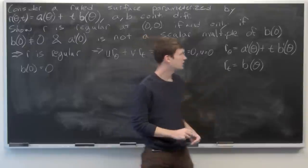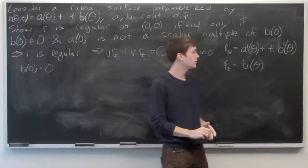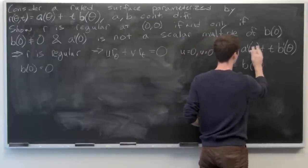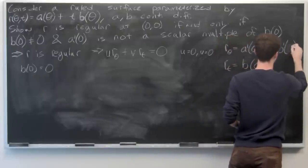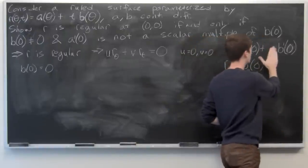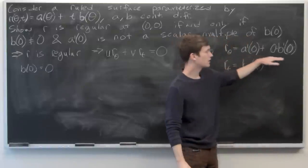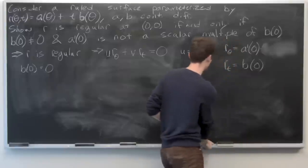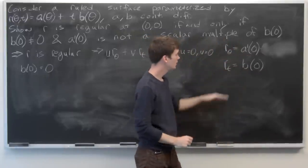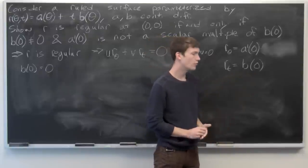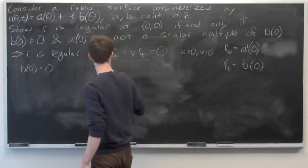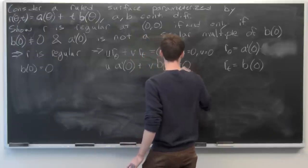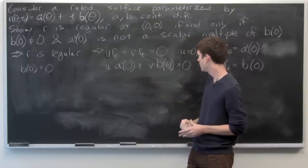We evaluate these at the point (0,0), since we're assuming r is regular at (0,0). Substituting θ = 0 and t = 0, the second term in r_θ vanishes, giving us r_θ = a′(0) and r_t = b(0). So our equation becomes: u·a′(0) + v·b(0) = 0.